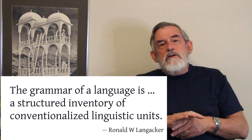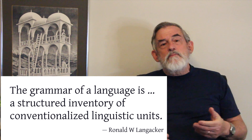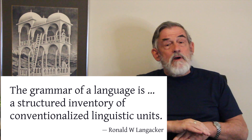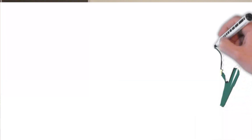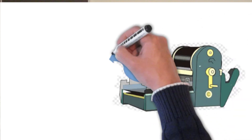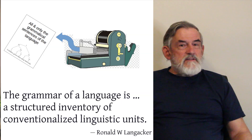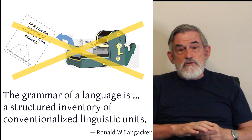Langacker chose that term in conscious reaction to another metaphor that was around very much at the time he wrote that, and it's still around quite strongly. A lot of people think of the rules of a language or of the grammar of a language as a machine — a machine that spits out grammatical sentences, clauses, phrases, and discourses. This machine knows how to make them just right. And Langacker says, nope, that's not a very good metaphor to use.